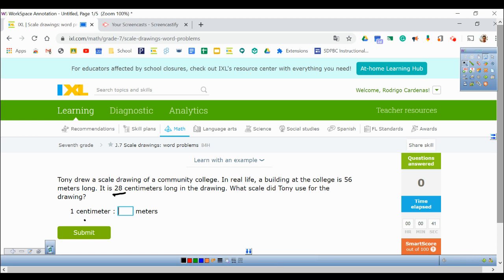So in this case, we want to find out one centimeter is equal to how many meters. We know that 28 centimeters is equal to 56 meters from our question.